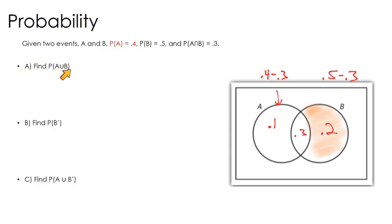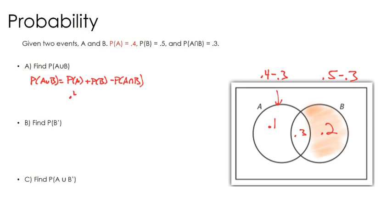First, we can just use our formula. The probability of A or B is equal to the probability of A plus the probability of B minus the probability of A and B. We can fill in our blanks: probability of A is 0.4, probability of B is 0.5, and we subtract the probability of both, which is 0.3. If I do that, we end up with 0.6.